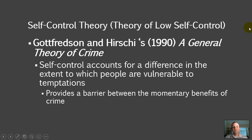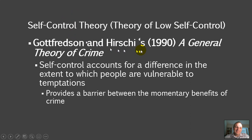What makes Travis Hirschi interesting is that he actually, with his student Gottfredson, in 1990 wrote a book called A General Theory of Crime — his second theoretical perspective. Most theorists develop just one big theory within criminology, so Hirschi is unique in being associated with both social control theory and the self-control theory, also called the theory of low self-control. It is a control theory as well, but it really isolates the single idea of self-control.